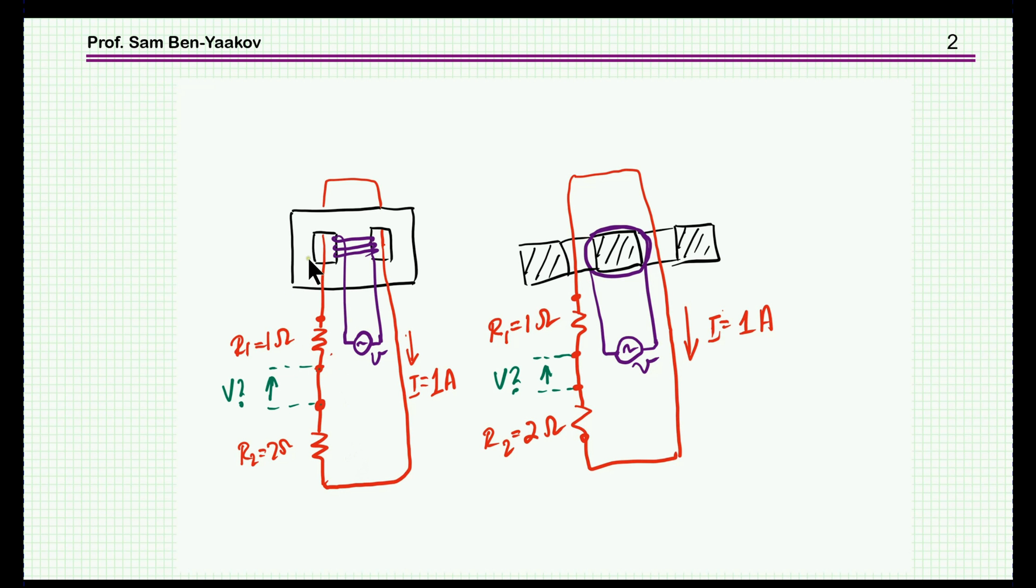So here is the riddle. We have a ferromagnetic core, that's a double E core. There is a primary here, the excitation at the primary. There is a secondary here, it's a red loop here, which has two resistors in series. We know that the voltage induced in this secondary winding is generating a current of 1A.